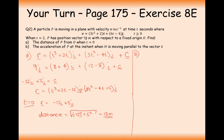Part B: find the acceleration of the particle at the instant when it is moving parallel to the vector i. If moving parallel to i, the j component of the velocity must equal zero. Taking the j component of the velocity: 6t minus 4 equals 0, giving t equals 2 thirds. This is the time at which it is travelling parallel to the i vector.